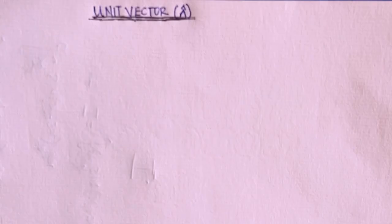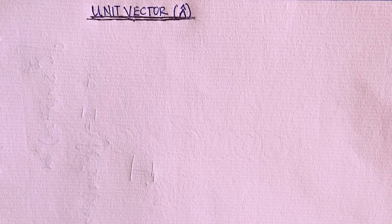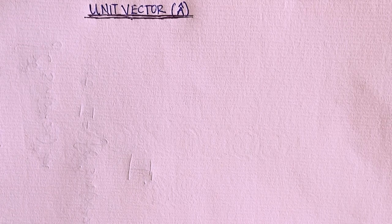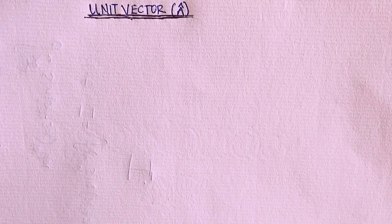Welcome to physics class. In this video I'll be talking about unit vectors. First, what is a unit vector? A unit vector is a vector that has its magnitude to be exactly equal to 1, and it always points to a particular direction.